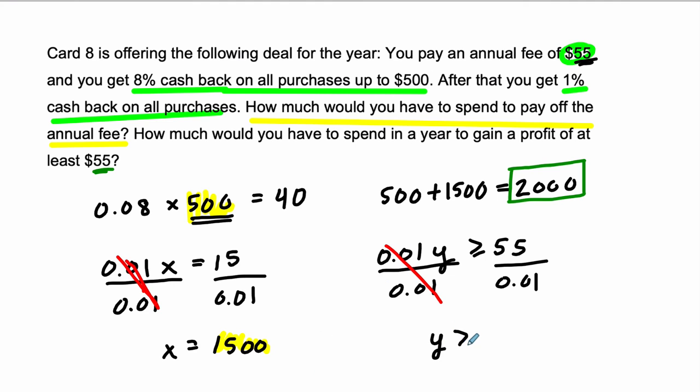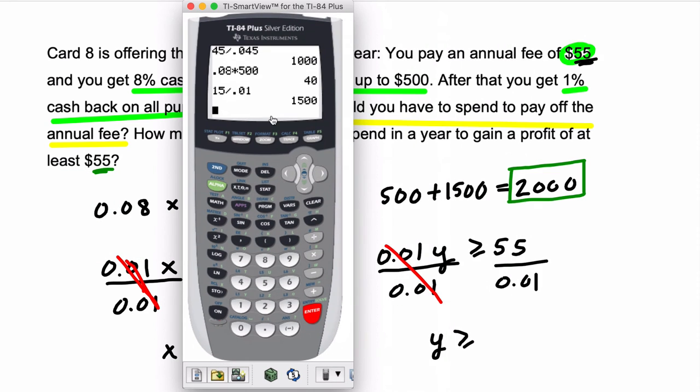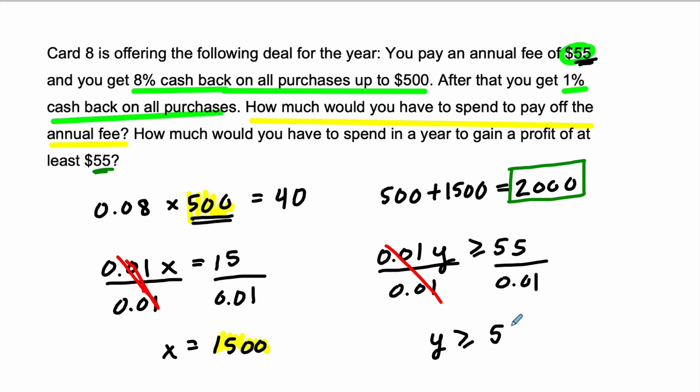And the amount we have to spend is going to be, what is that? It's quite a bit, right? So $55 divided by 0.01. It's $5,500. So $5,500.